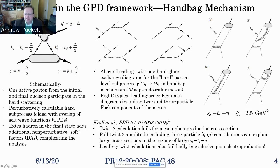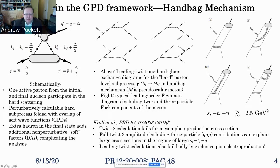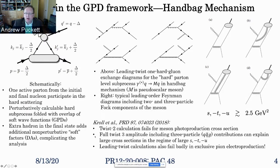The condition is that all the Mandelstam variables be sufficiently large compared to Lambda QCD. The good news is that recently the theorists have calculated the full twist-three amplitude, including the three-particle Fock components of the meson. The twist-three calculations can explain the large cross sections measured in the high energy regime. This is a strong hint that twist three is dominant in this process, and you can actually test this prediction unambiguously using polarization observables — which is the subject of this proposal. The leading twist calculations have also done a fairly poor job describing deeply virtual meson production and exclusive electroproduction of pions.